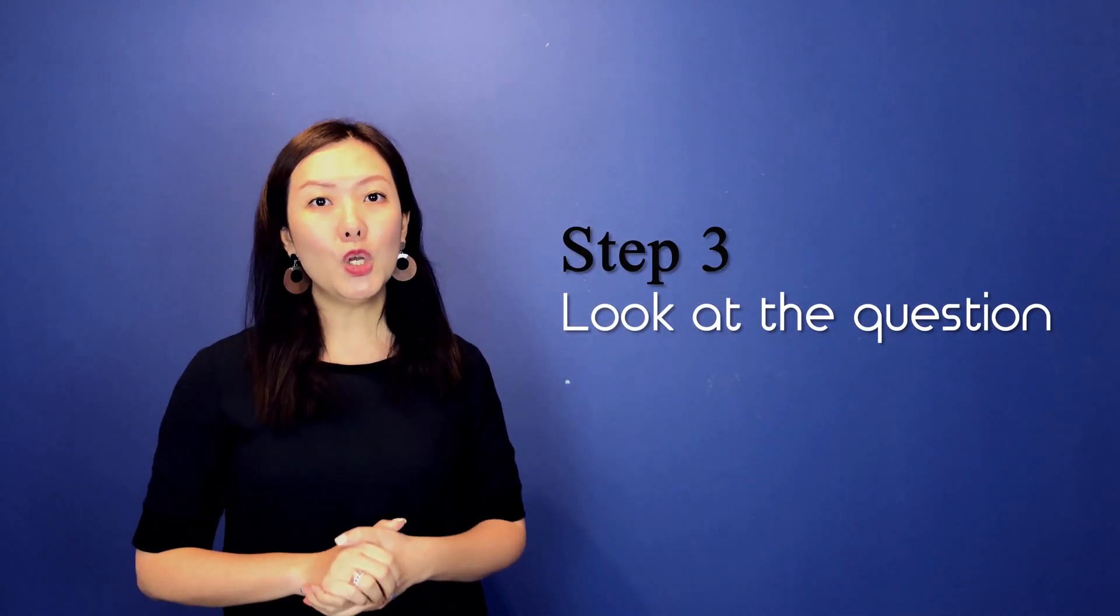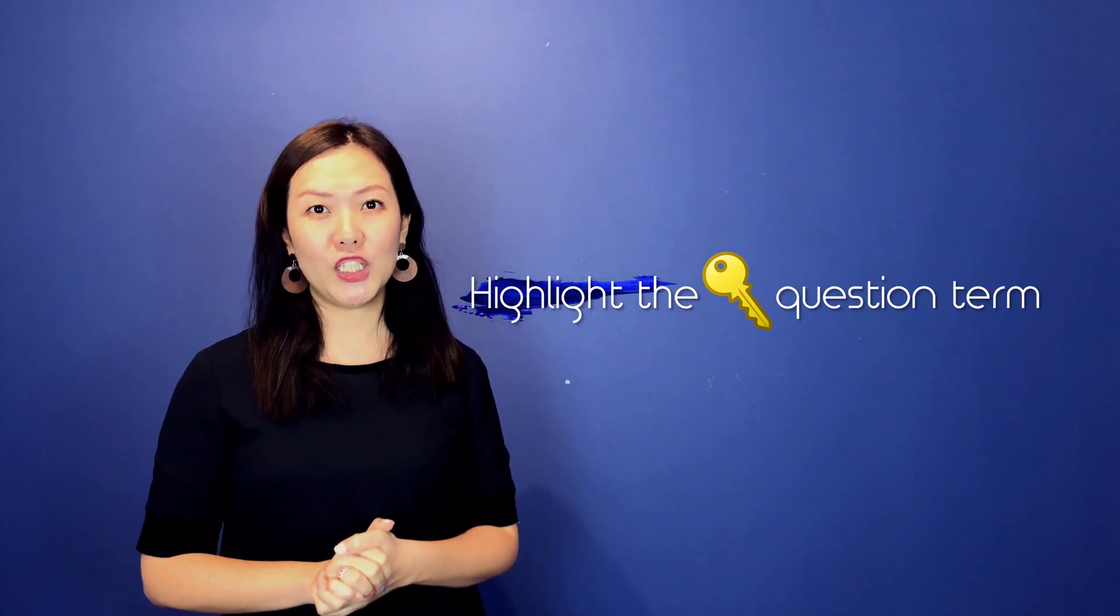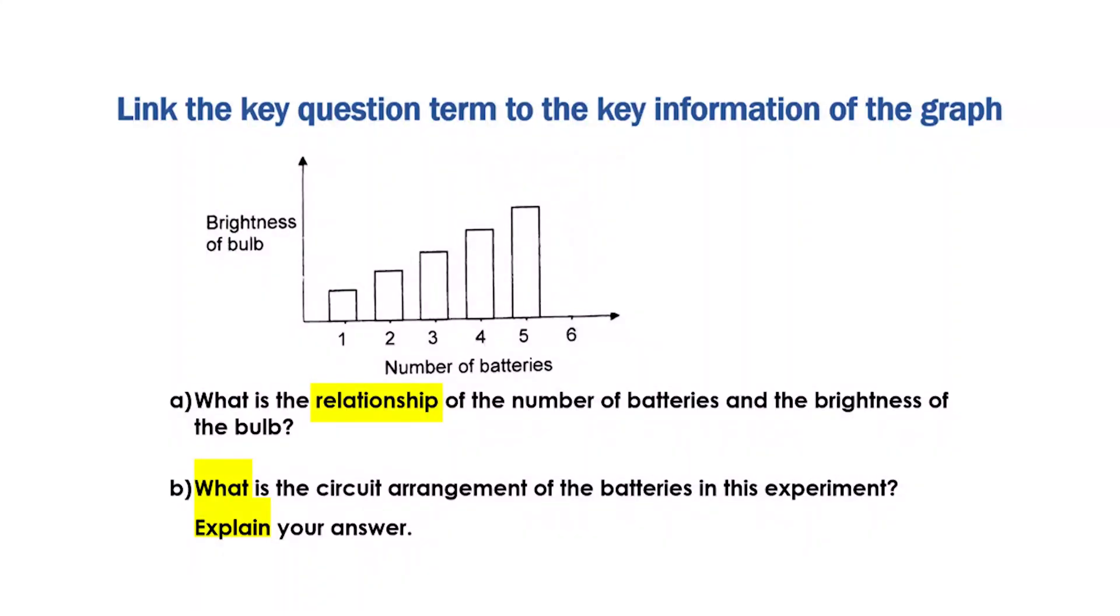Now the third step, look at the question. And yes, ta-da! Use your highlighters. Highlight the key question term. Link the key information from the graph to the question.